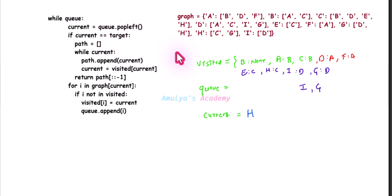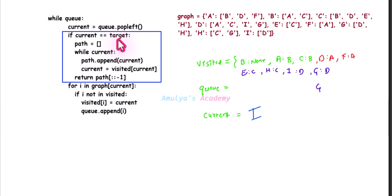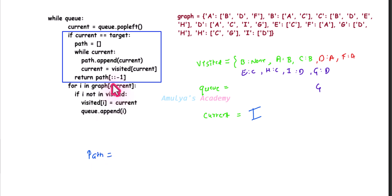Current becomes I via queue dot pop left. If current is target — yes! Current node I equals our target node I, so this condition becomes true and we execute its body. Create a list called path. While current: current is I, it represents some value so it evaluates as true. Path dot append current — append I to the list.